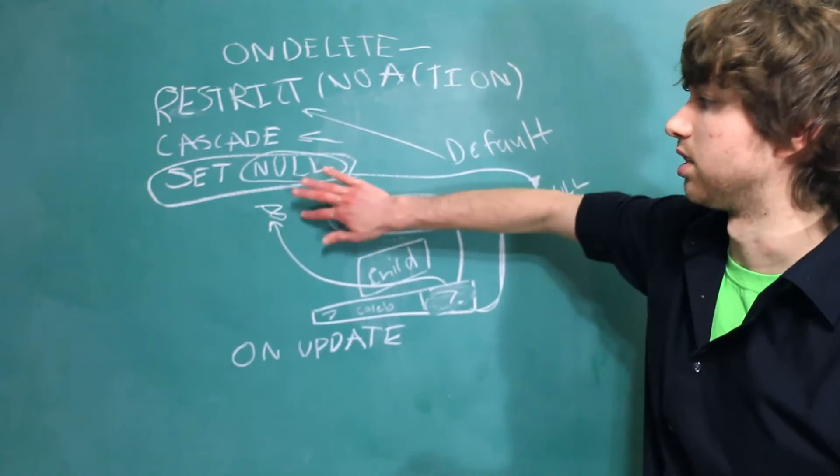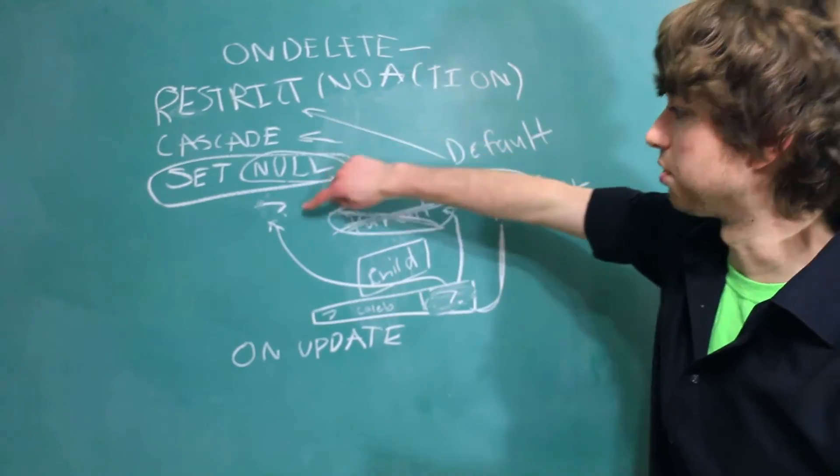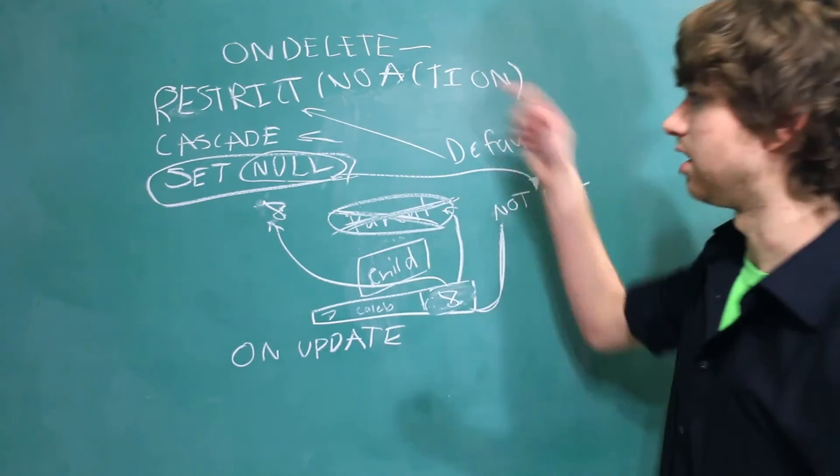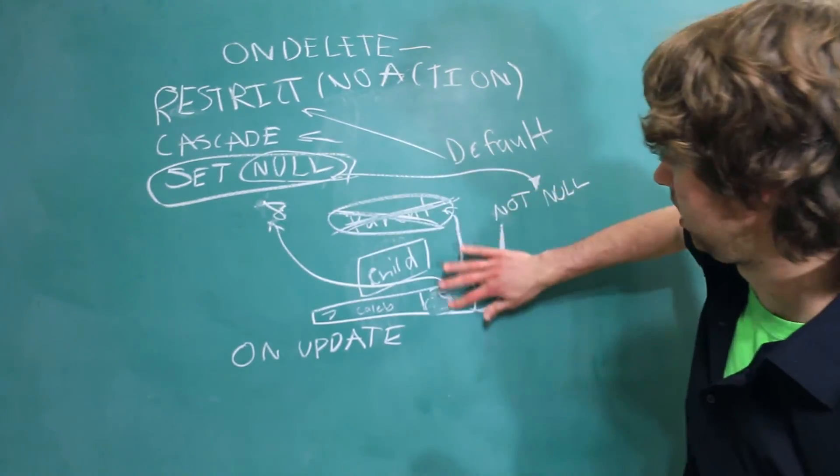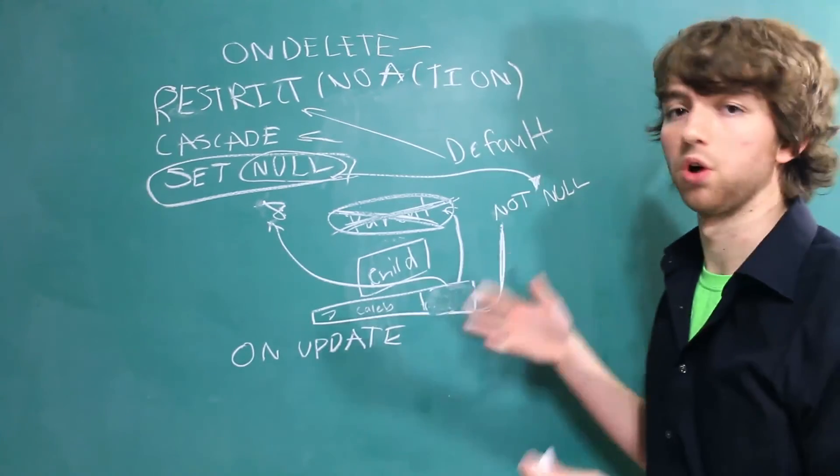With Restrict, it's just not going to let you change it, and it's going to force it to stay at 7. Cascade will send that change down to the child, and they'll both be changed to 8. SetNull will literally just erase this value here. So that's kind of how all of those work.